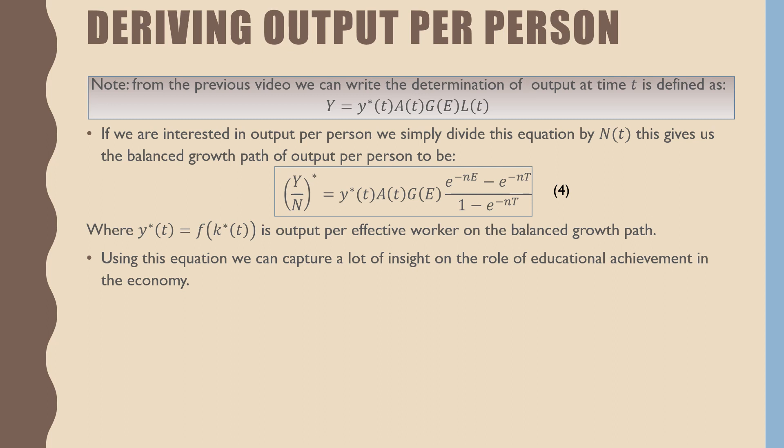If we are interested in output per person, we simply divide this equation by N(t). This gives the balanced growth path of output per worker to be this following equation.